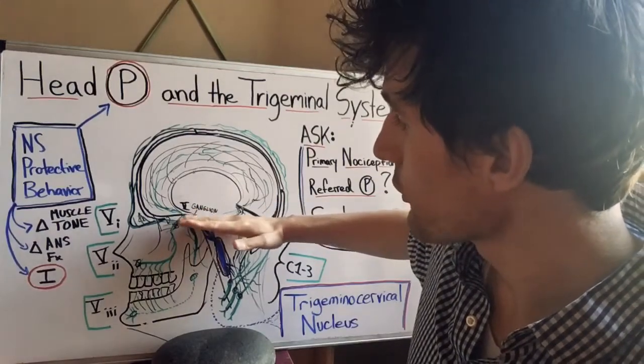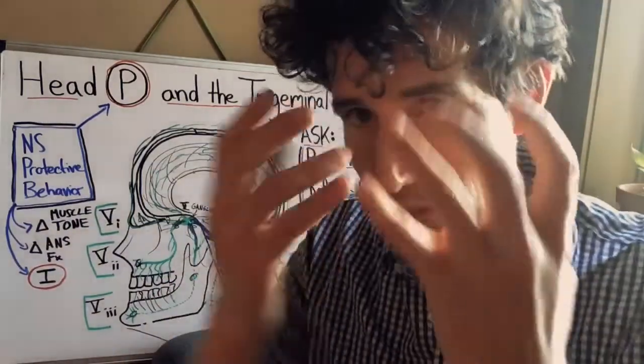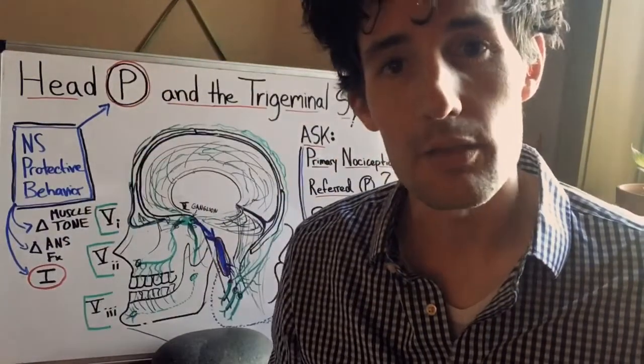So think about the whole cerebrum that's to say above the tentorium on the inside the skull as well as the face and the top of the head. That is the trigeminal nerve.